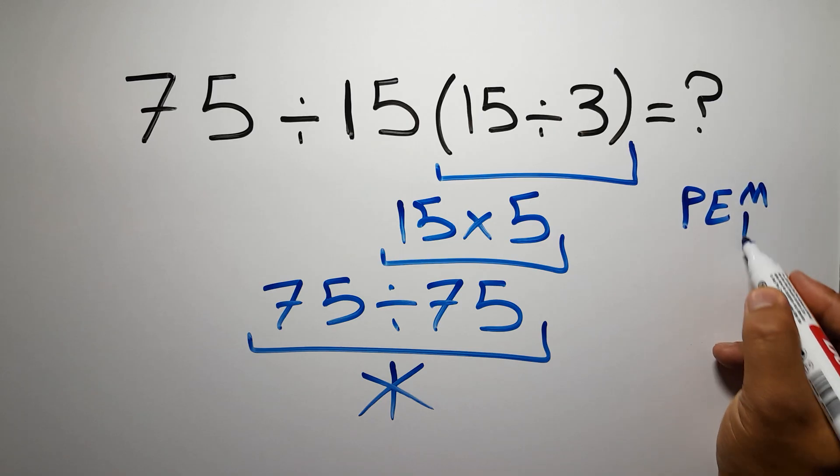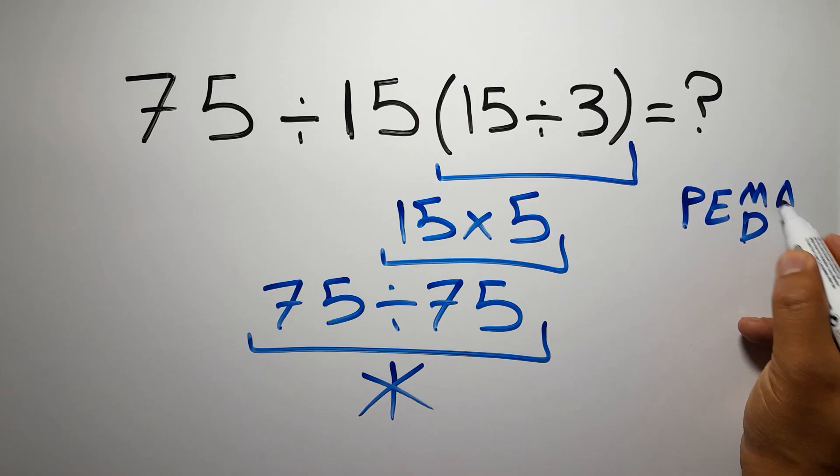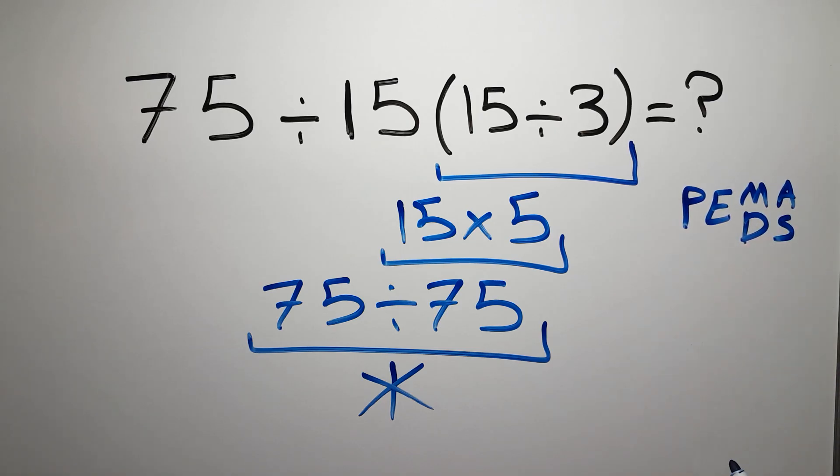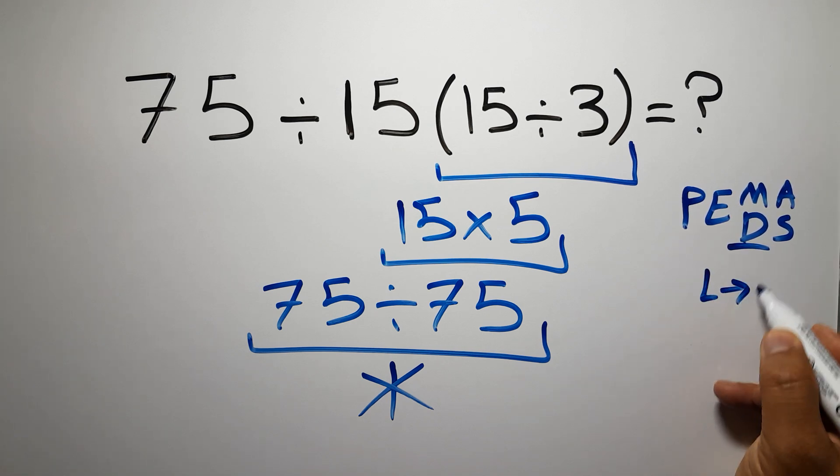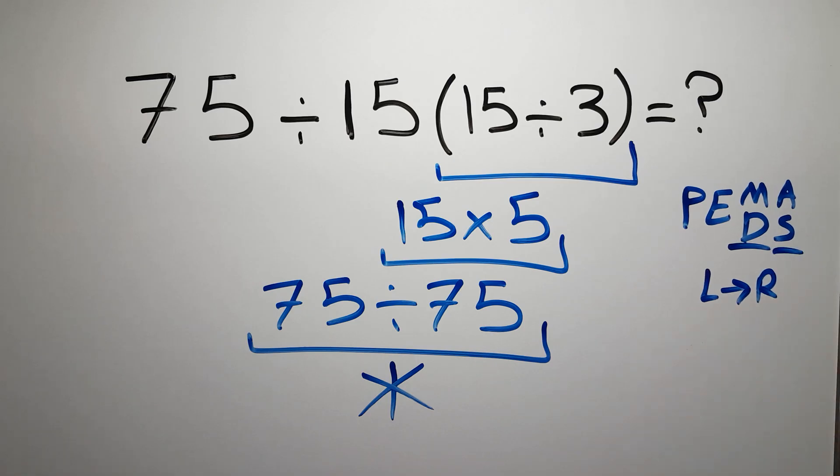Exponents, then multiplication or division, and finally addition or subtraction. Remember that multiplication and division have equal priority and we have to work from left to right. The same applies to addition and subtraction. In this expression we have...